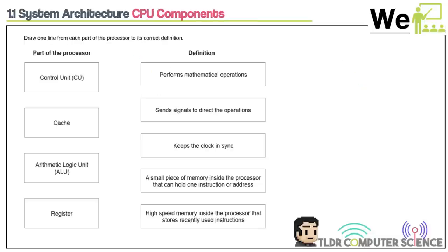Now looking at the chief components of a CPU — four marks right there. The strategy is to do the obvious ones first. There are four parts and five definitions; there's one odd one out. 'Performs mathematical operations' — that's the ALU, arithmetic logic unit, all day. 'Sends signals to direct the operations' — that's the control unit, which manages the fetch-decode-execute cycle.